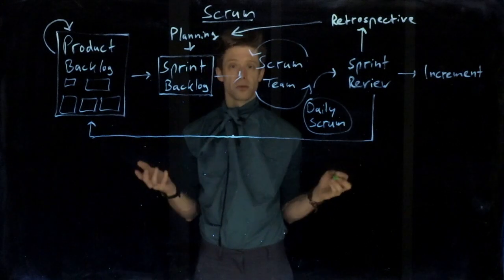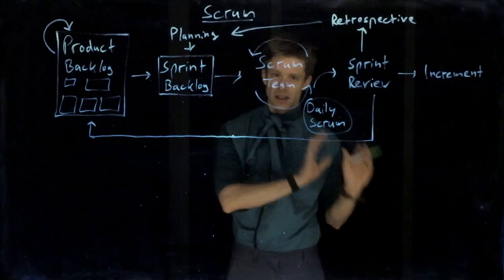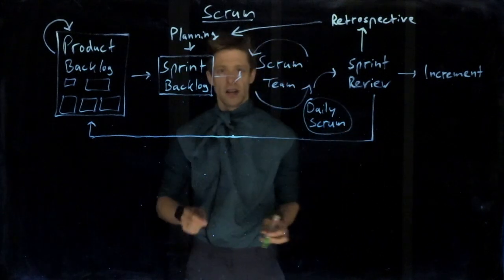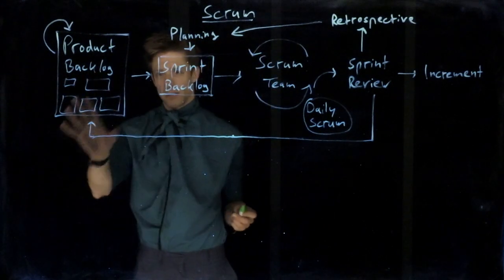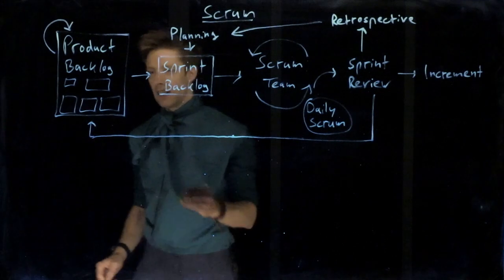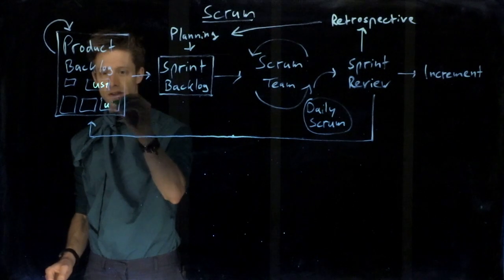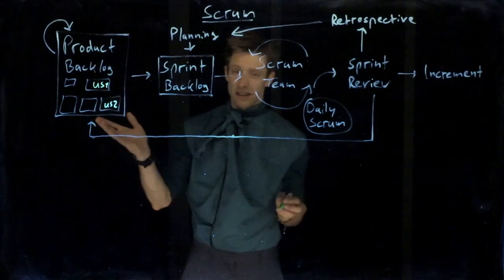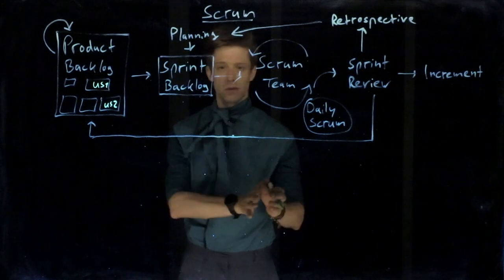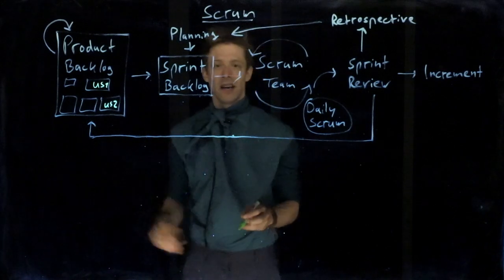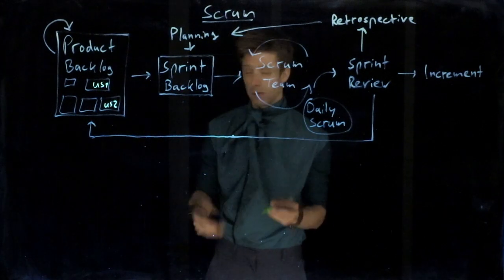Here you see the figure that describes the Scrum process, and I will just walk you through the different steps, the different deliverables, and the different people that are involved. We start here on the left side with what is called the Product Backlog. The Product Backlog is a collection of typically user stories. As you learned in the requirements lectures, they are typically formulated in the way that you say, as a user, I want to be able to, then you have a functionality, and then in order to, and you get the benefits.